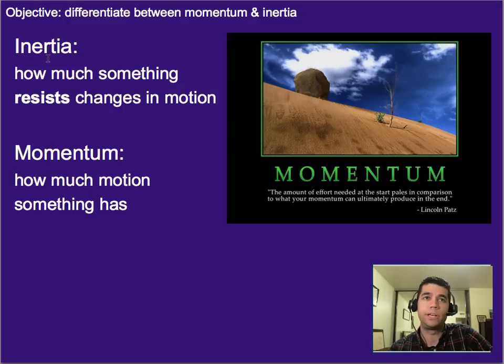Another way to differentiate between them is to state what each one is. Inertia is how much something resists changes in motion, whereas momentum measures how much motion it has—not a resistance to changes in motion, but what amount of motion it has. That's another difference between the two.